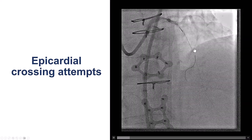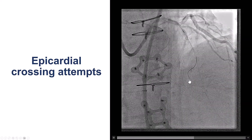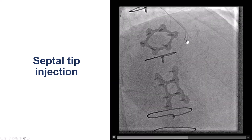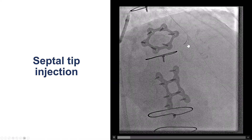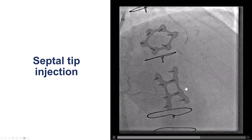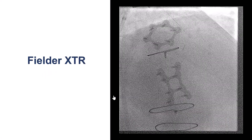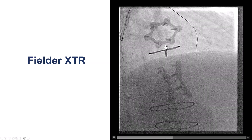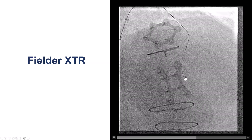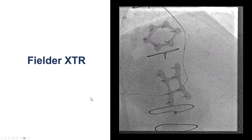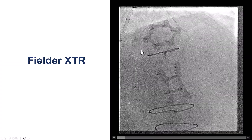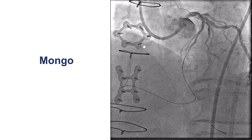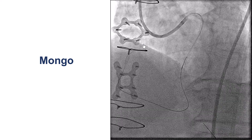Now we had some better flow, though still with comparative flow. We advanced the guidewire into what we thought was the second septal that seemed to have a continuous connection. To confirm, we delivered the Caravan and did a tip injection. Sure enough, we had flow going towards the apex, then turning towards the base and connecting with the PDA. We then took a Fielder XTR wire — a soft polymer-jacketed tapered tip wire — which went towards the apex and very nicely made the bend, going very easily into the distal right coronary artery and heading towards the proximal right. Literally, this was a within-seconds crossing, but it had taken several hours to reach this point.